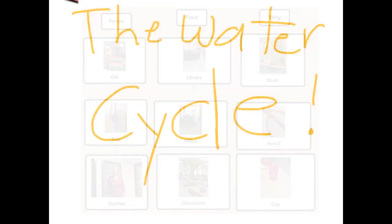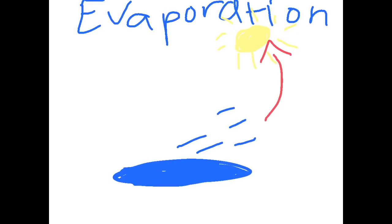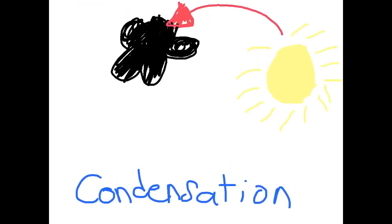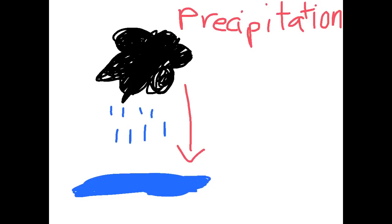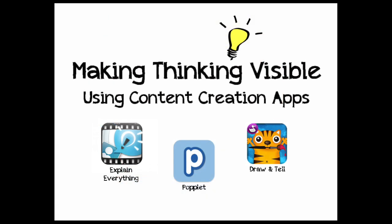The water cycle. Accumulation is the first stage of the water cycle. It is when water is in a puddle. The second stage of the water cycle is evaporation. Evaporation is when water from a puddle goes up into the sky. Condensation is the third step in the water cycle. Condensation is when the water from the sky goes into a cloud. The fourth step in the water cycle is precipitation. Precipitation is when it rains. Then it goes over and over again.